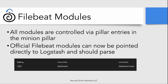As Doug mentioned, we're going to be using FileBeat modules in 2.3.60, and one of the things we thought about was how do we make this easy for users to add and remove new modules? We've come up with using pillar entries for those, and we'll walk through that here in a second. Any official FileBeat module can be pointed directly to Logstash and it should parse. For example, here's an Elasticsearch FileBeat module, and you can see that it gets parsed by the actual module and goes into Elasticsearch.